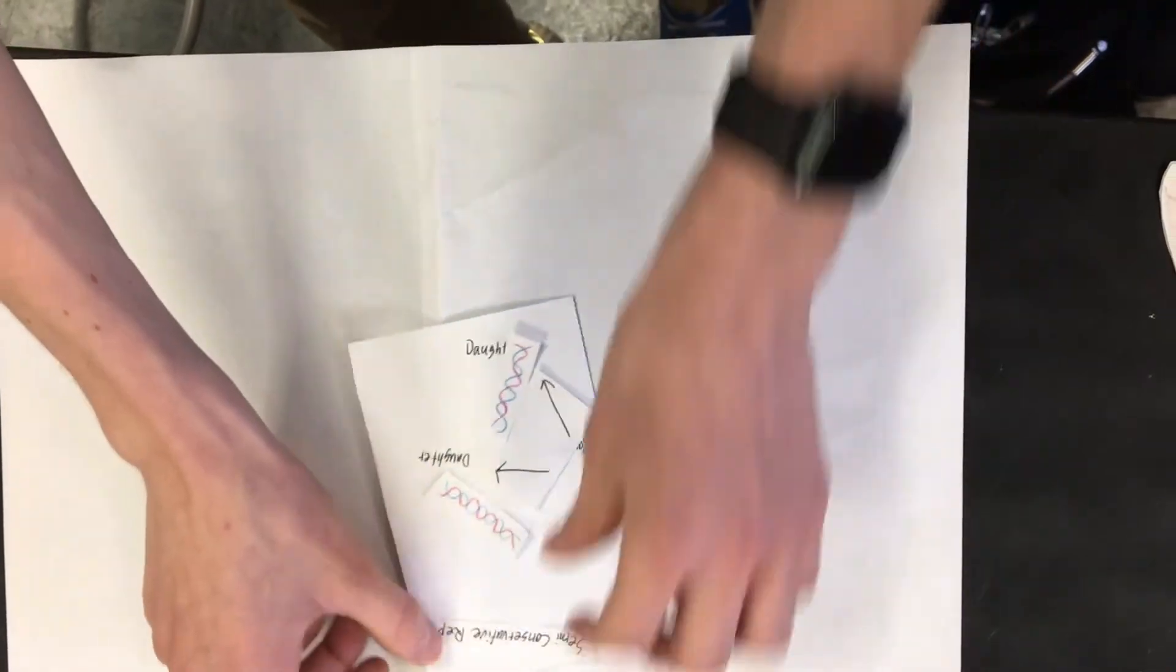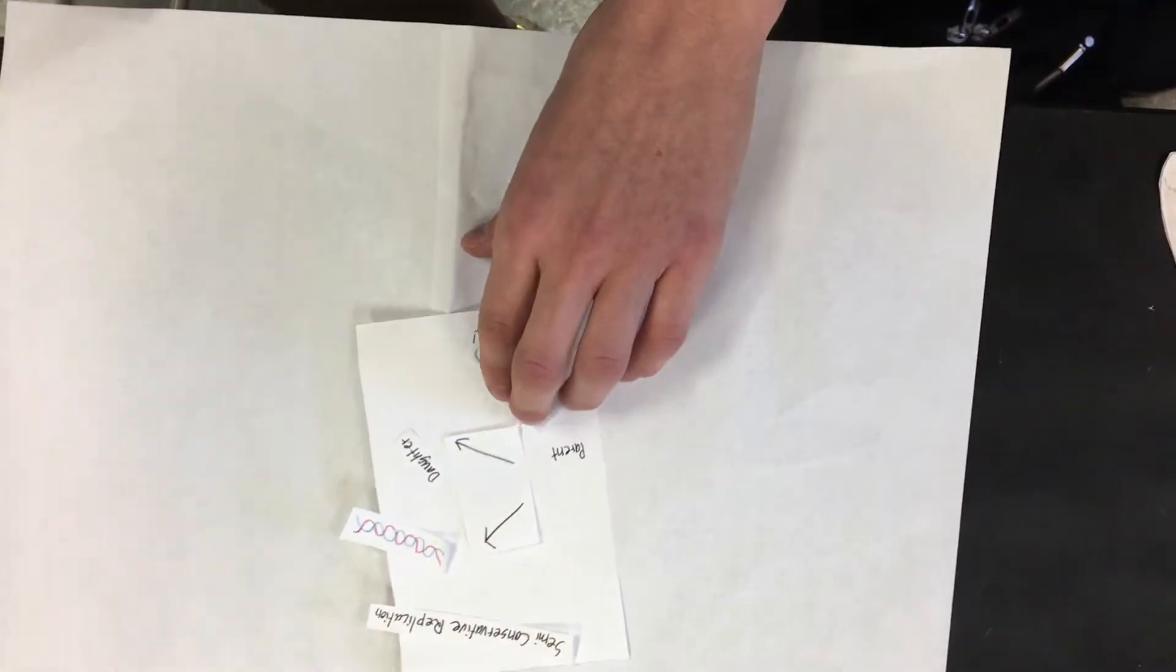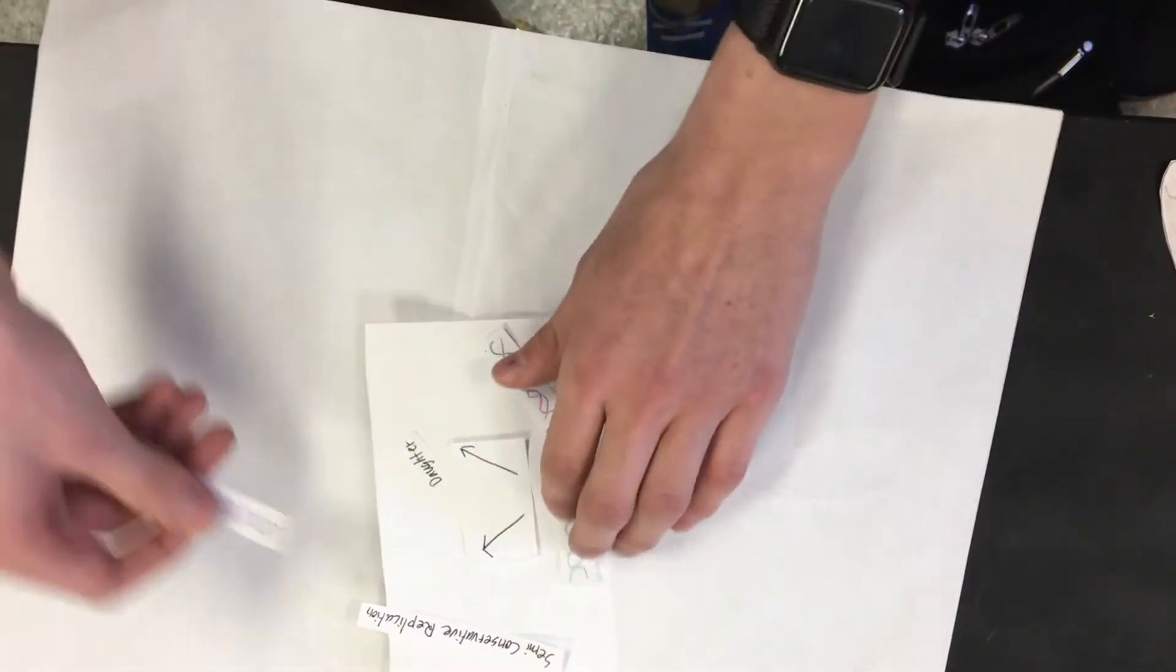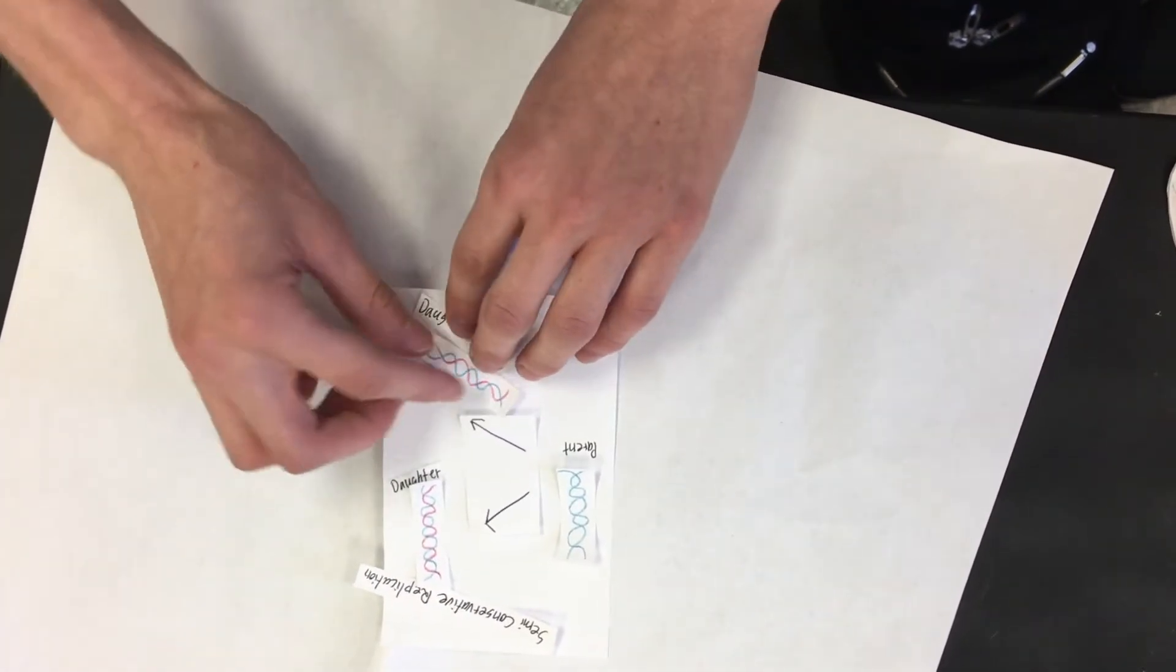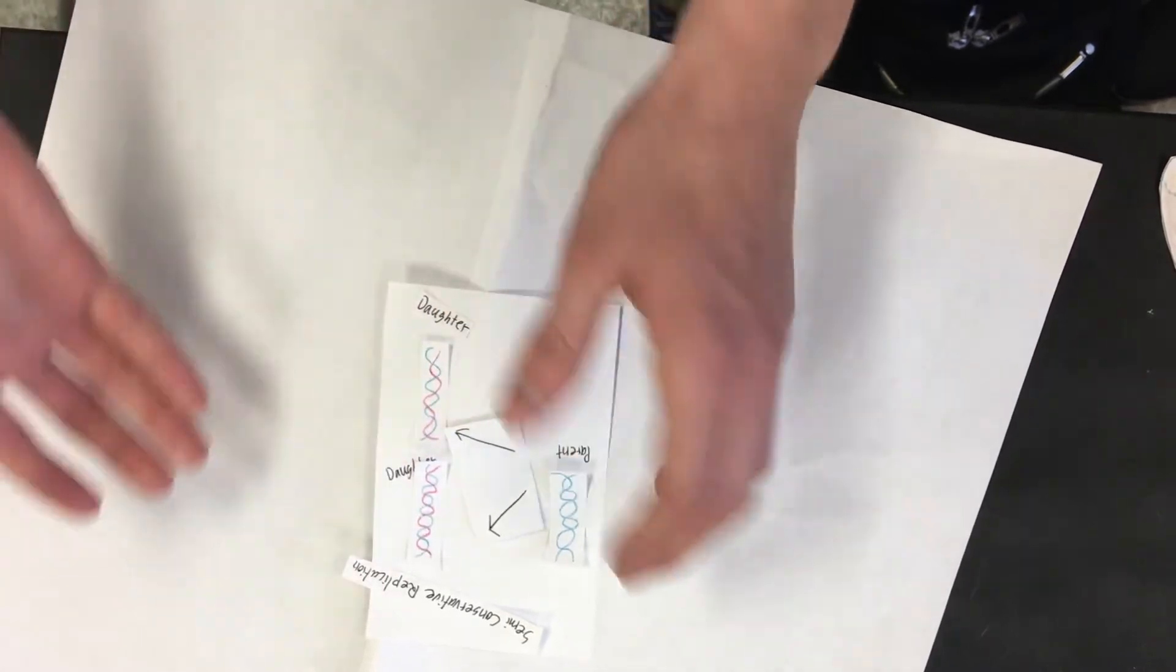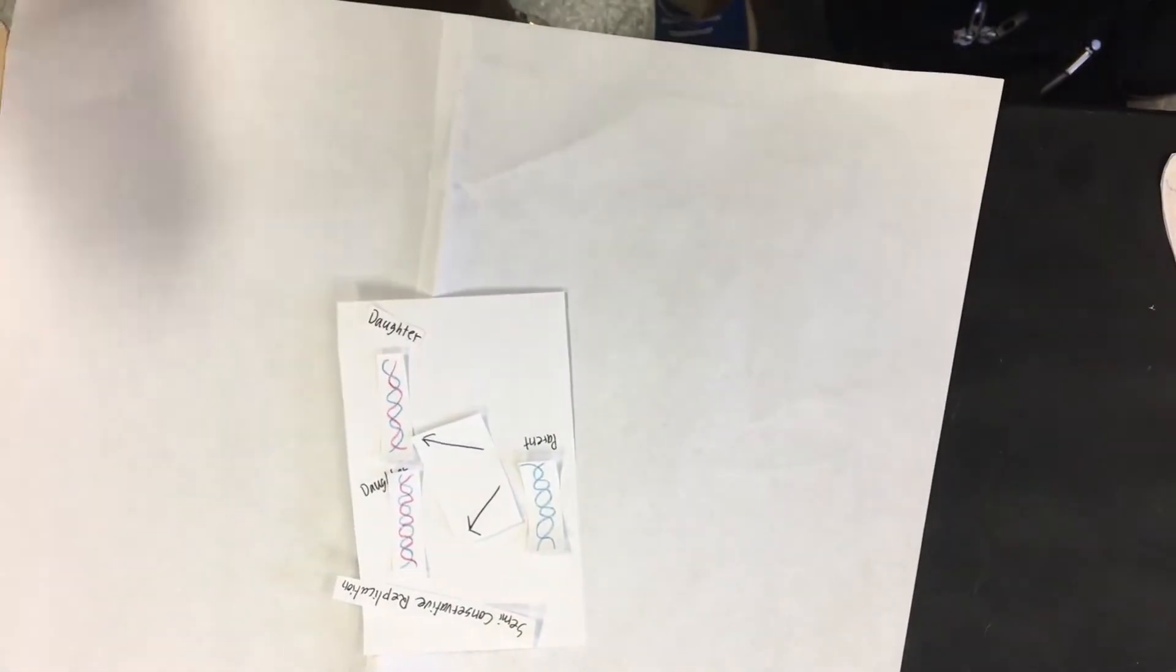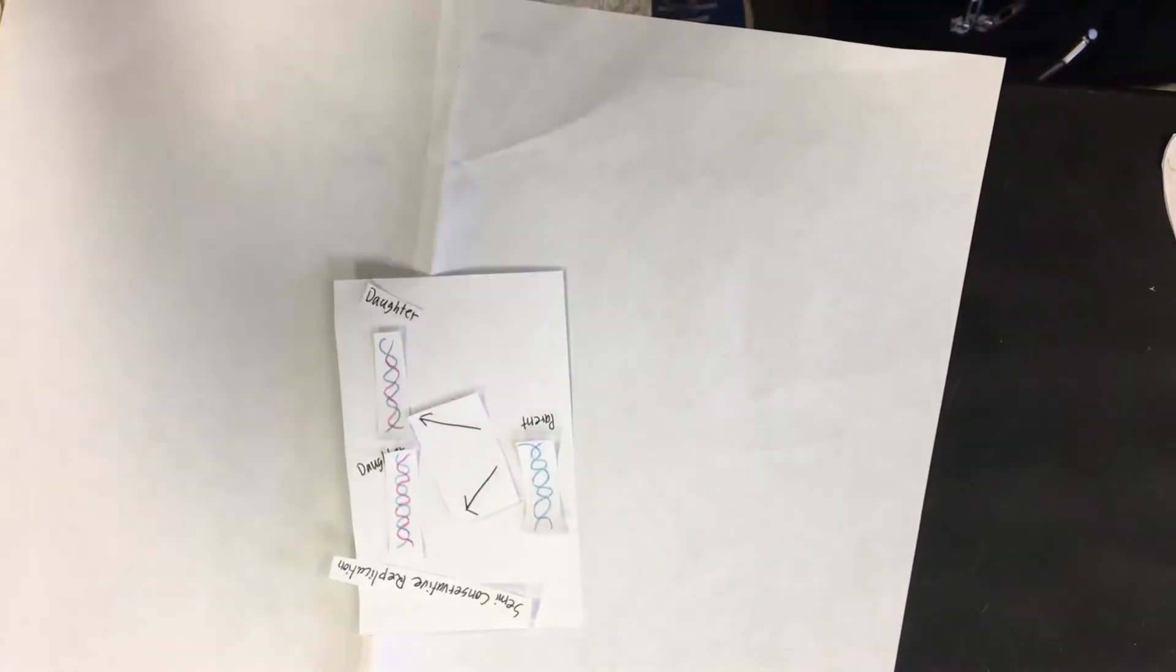Now, it does this by semi-conservative replication, which involves the parent, which is right here, forming two daughter identical pieces of DNA. And if they weren't identical, then it wouldn't be able to produce the proteins and divide.